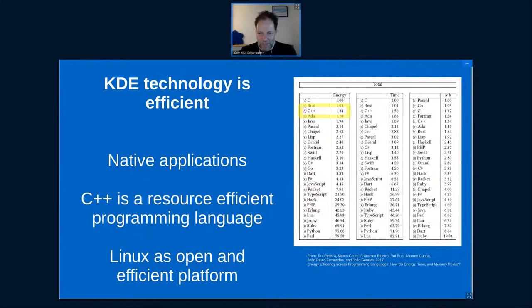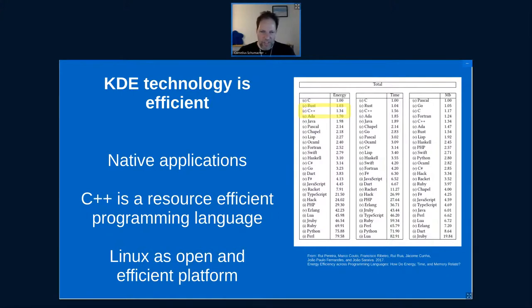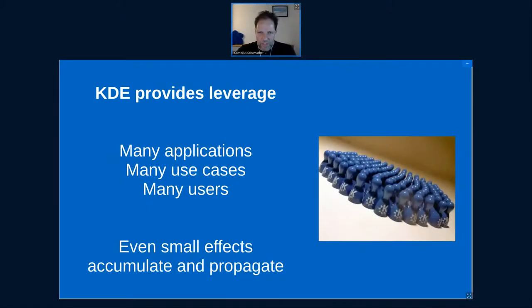We can write efficient software, and we have Linux as an open and efficient platform. Linux has been around for a long time and one prominent use case has been running on old hardware — making computers available for people who can't afford new hardware, or getting more use from hardware you already have, so you don't need to buy a new one just because other software would require you to upgrade. KDE is in a good position there. Another aspect where KDE can have quite an effect is because it provides leverage — we have many applications, many use cases, and many users.